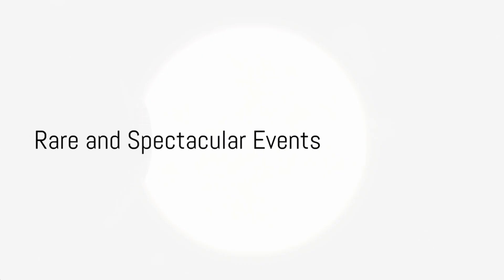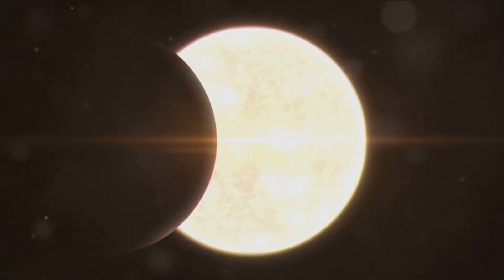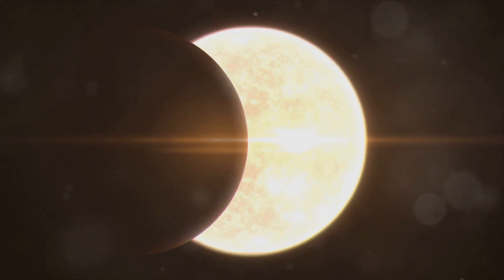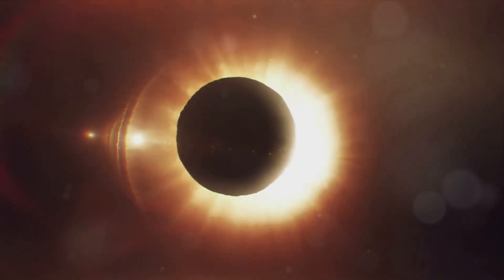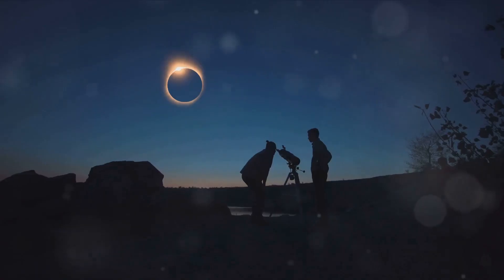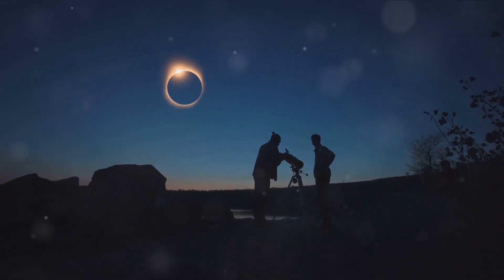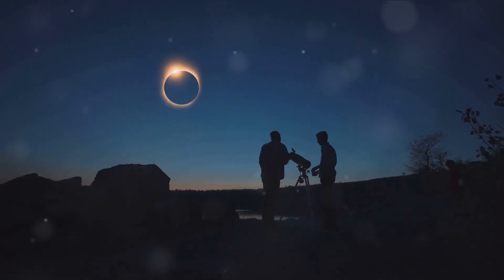Rare and Spectacular Events. Solar eclipses are relatively rare events, occurring approximately every 18 months somewhere on Earth. However, the path of totality, where the total eclipse is visible, is often narrow, making it a once-in-a-lifetime experience for many. This rarity adds to the allure of the Solar Eclipse Jam, drawing crowds of eager spectators to witness this cosmic spectacle.